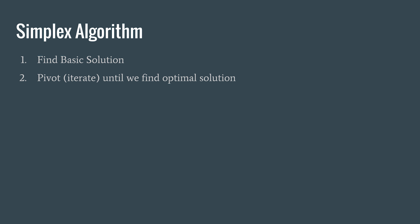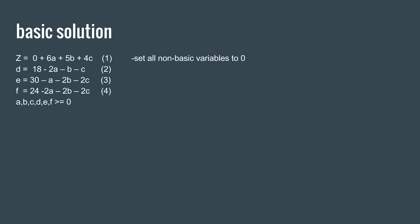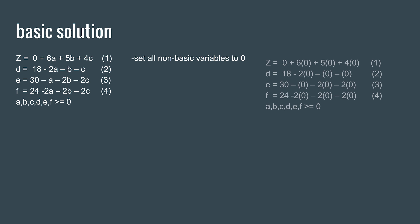The simplex algorithm consists of two steps. The first step is to find the basic solution, and the second step is to pivot or iterate until we find the optimal solution. To find the basic solution, we set all non-basic variables to zero. We now have a solution with a value of zero.